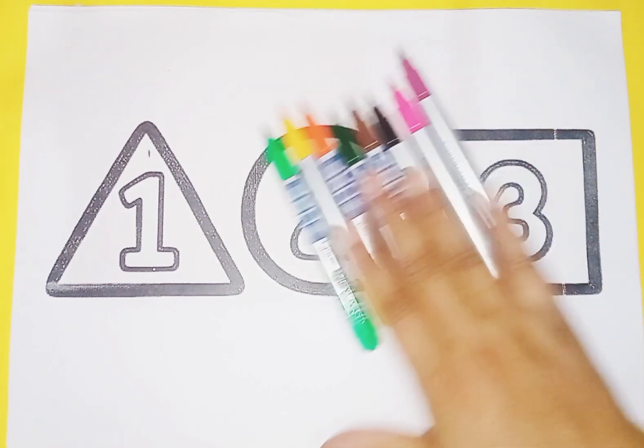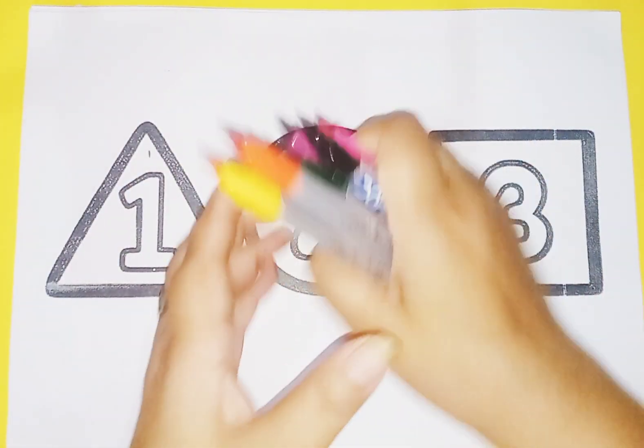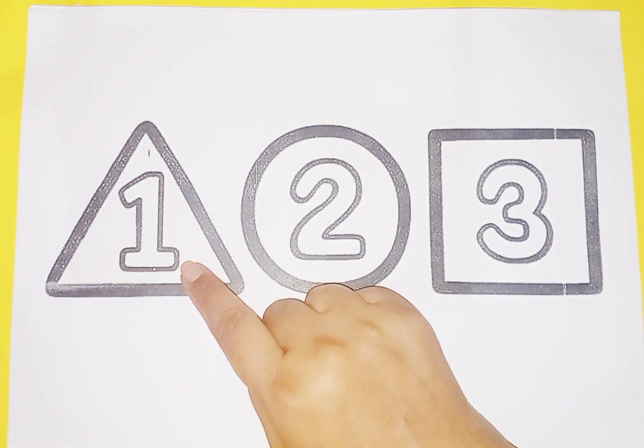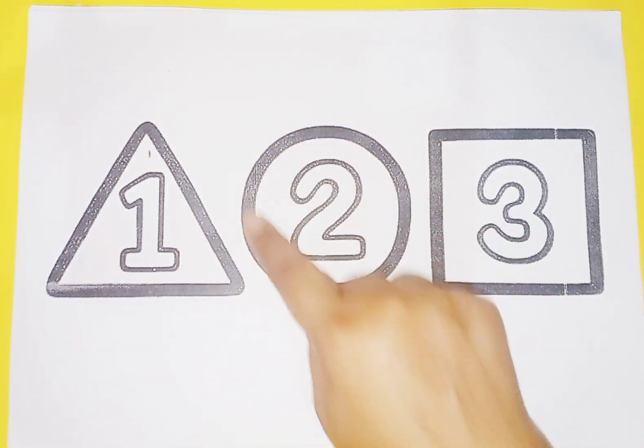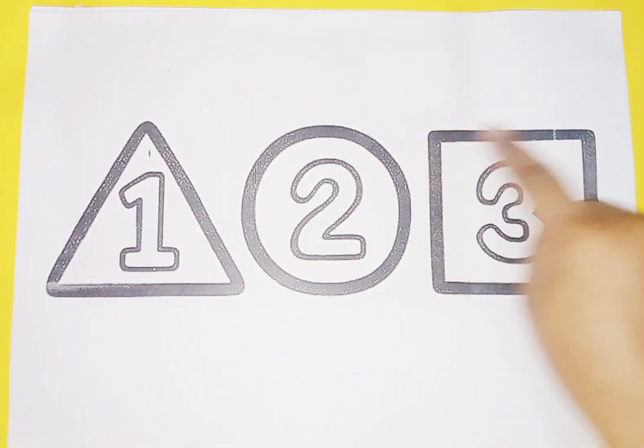These are colors. Now we learn shapes and number. This is triangle, circle, square.